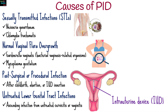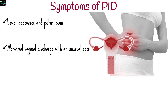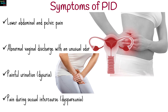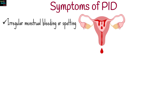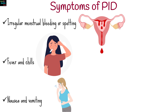PID symptoms can range from mild to severe and may include lower abdominal and pelvic pain, abnormal vaginal discharge with an unusual odor, painful urination, pain during sexual intercourse, irregular menstrual bleeding or spotting, fever and chills, and nausea and vomiting.